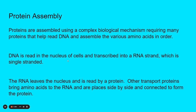Proteins are assembled using a complex biological mechanism that requires many proteins that help read the DNA and then assemble the various amino acids in order. DNA is read in the nucleus of the cells, and then it gets transcribed into an RNA strand. DNA, as you know, is that double helix where it's got the two sides and they twist. So basically what they do is unravel the DNA to make it look more like a ladder, and then they go through and read one side of it and create an RNA strand, which is just a one-sided DNA.